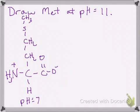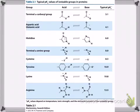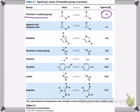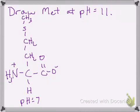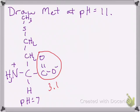Now, unfortunately, that's not pH 11, which is what the question is asking, but at least I've gotten started with this problem. The next step is to identify the functional groups on methionine that could possibly change due to changes in pH. To do that, I need to pull in a chart that indicates the pKa values of different functional groups in amino acids. For methionine, we have a couple of groups to consider. First, all amino acids have a terminal alpha-carboxyl group, and it has a pKa of 3.1. I can go back to my structure and identify that group right here, and note that it could possibly change — its pKa is 3.1.